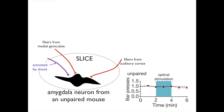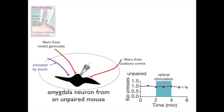Next, the investigators patched onto the amygdala cell and recorded in whole-cell mode. With whole-cell recordings, the membrane of the neuron is sucked into the lumen of the electrode, which allows for intracellular recordings, as shown in the top left of the slide. Voltage clamp recordings can now be made from the amygdala neurons.